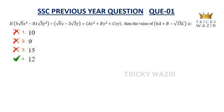Hello guys, welcome to Chukki Vazir. In this video, we solve an SSE previous year question. If 5√5·x³ minus 81√3·y³ divided by √5x minus 3√3y equals Ax² plus By² plus Cxy, then find the value of 6A plus B minus √15·C. We need to find the values of A, B, and C by substituting.